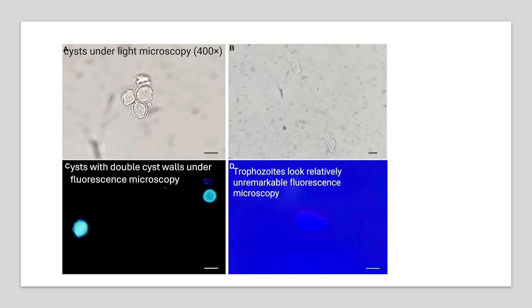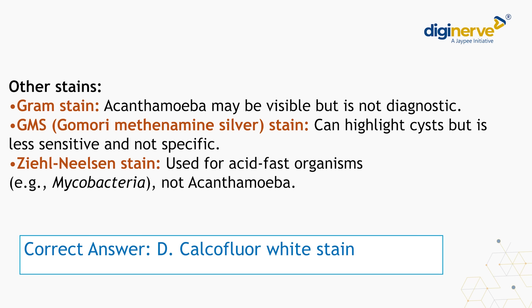This image shows the cysts under the light microscope. This image shows cysts with double cyst wall using the calcofluor white stain under fluorescence microscopy. The trophozoites look relatively unremarkable on fluorescence microscopy as we can see in this image. As regards the other stains, Acanthamoeba may be visible with the Gram stain but it is not diagnostic. GMS stain can highlight cysts but is less sensitive and not specific, while the Ziehl-Neelsen stain is used for acid-fast organisms and not Acanthamoeba. Therefore, the correct answer is D, calcofluor white stain.